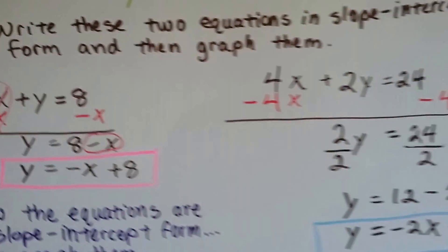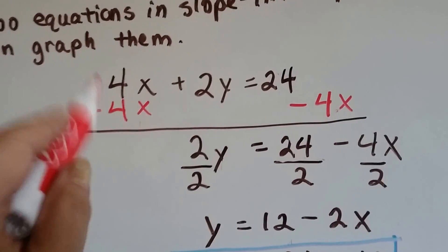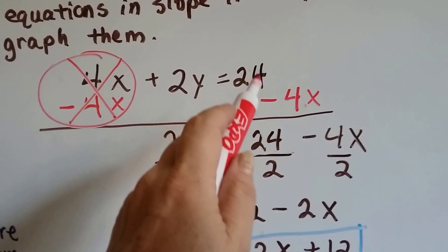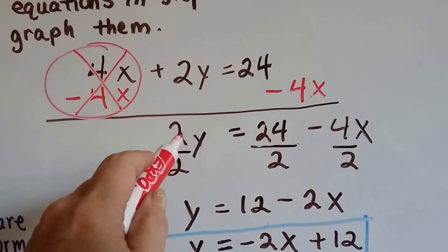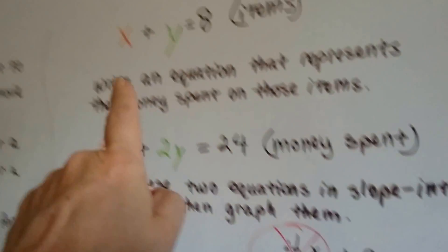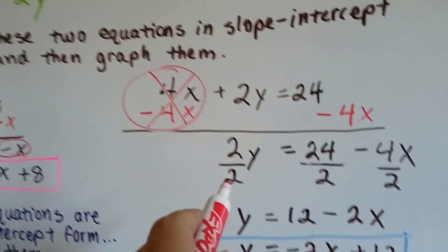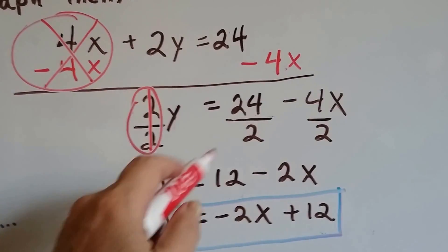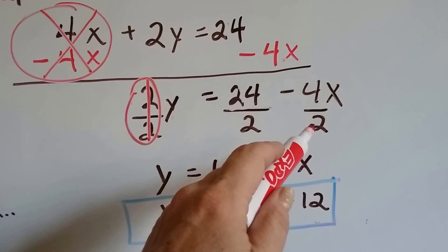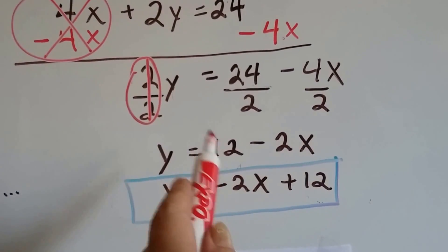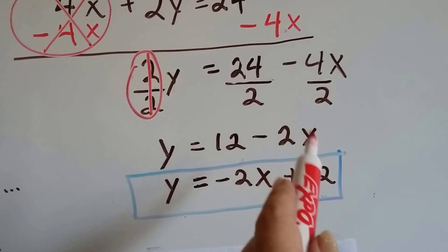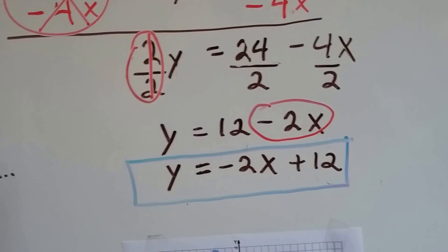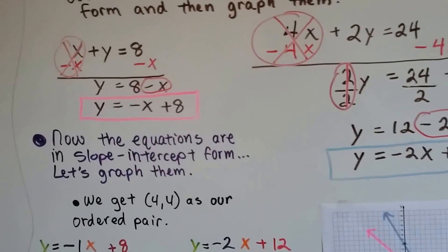Now we do it for the other equation: 4x plus 2y equals 24. First we subtract 4x from each side — that creates a zero pair. Now we've got 2y equals 24 minus 4x. To get y by itself, as it should be in slope-intercept form, we divide the entire equation by 2. We get y — the invisible 1 — equals 12 minus 2x. 24 divided by 2 is 12, and negative 4x divided by 2 is negative 2x. The y-intercept and slope trade places: minus 2x comes forward and positive 12 comes back. Now both equations are in slope-intercept form.